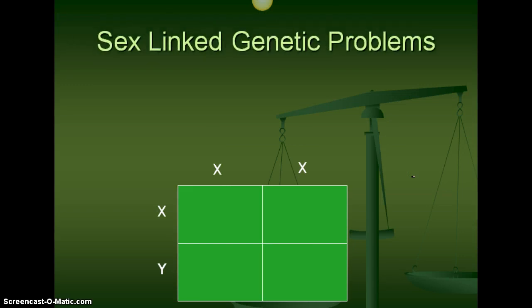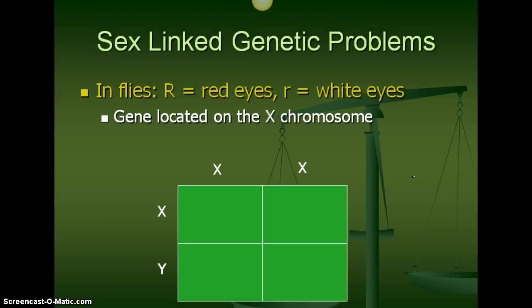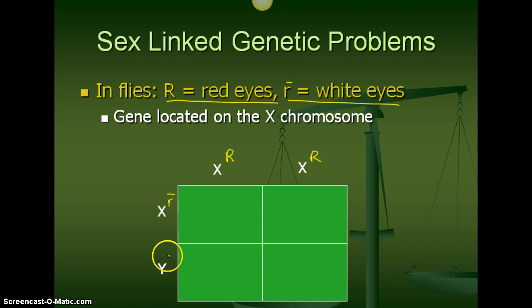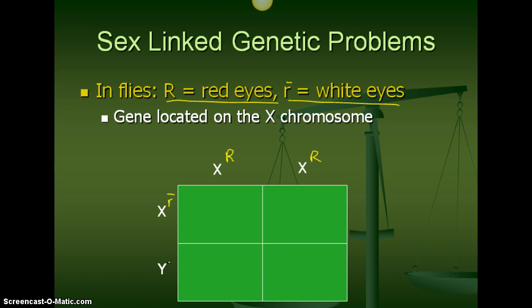We're going to try some sex-linked genetic problems. You have a Punnett Square given to you for sex-linked problem number one. Off to the side, write this in: big R equals red eyes, and little r equals white eyes. The problem is that we have a female fruit fly that is homozygous dominant for the trait, and a male who is white-eyed. Since the trait is linked to the X chromosome, the letter goes with the X only. There's no trait on the Y chromosome here, because it's not carrying that particular trait.